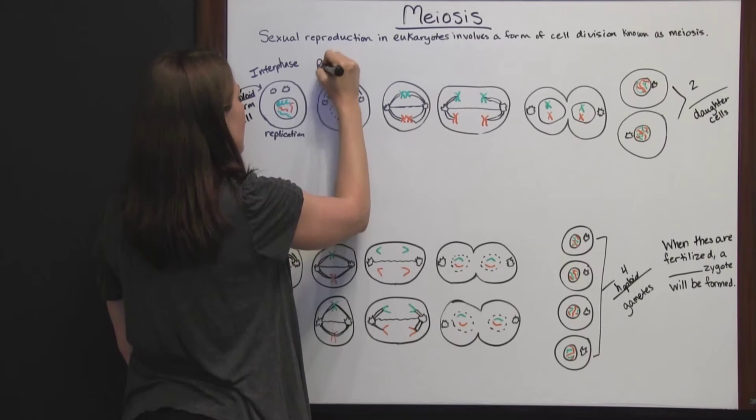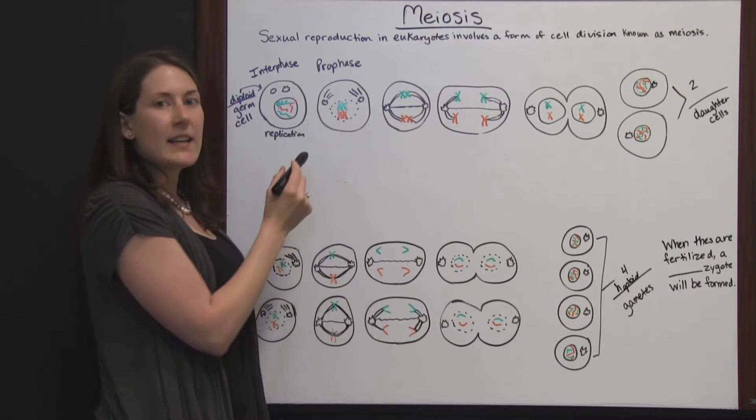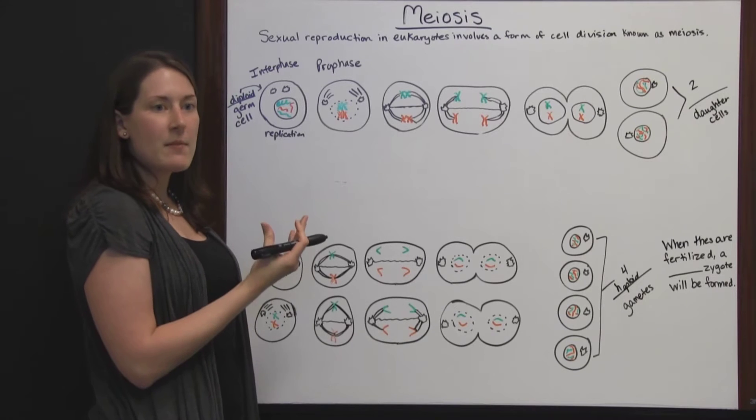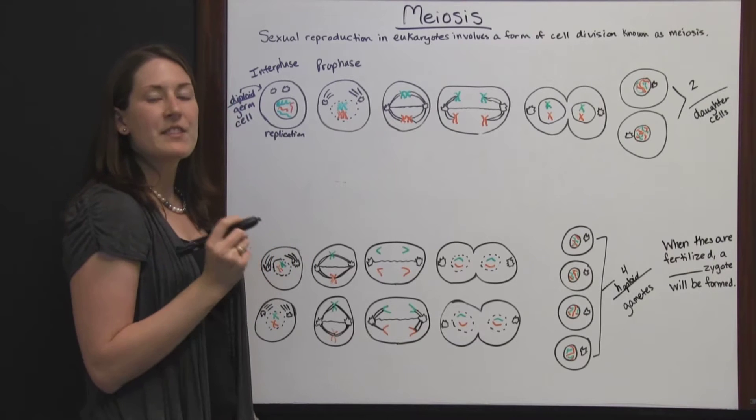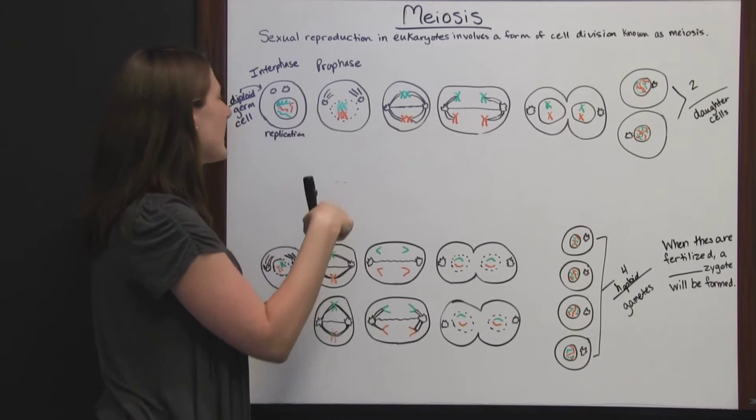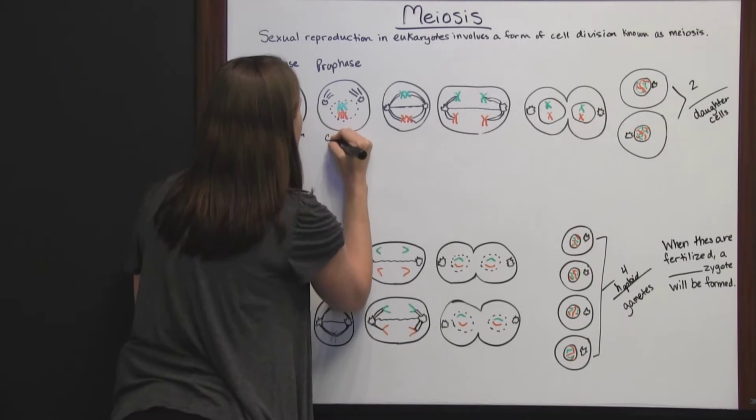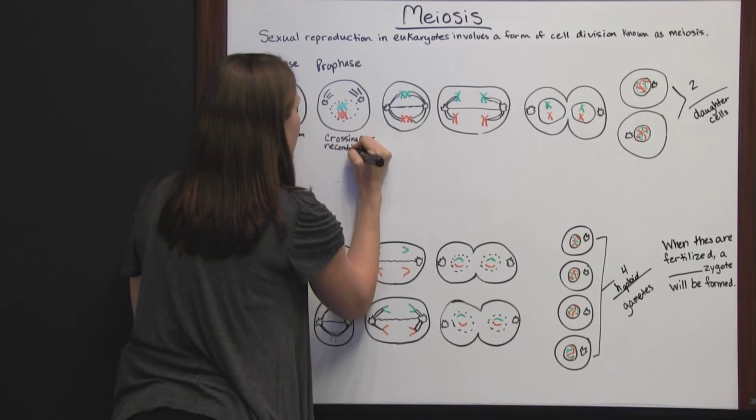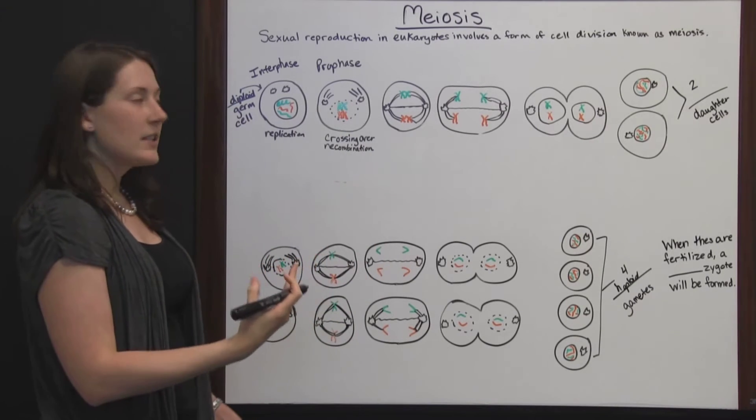In prophase I, the replicated genetic material lines up in homologous pairs, meaning each one is the same genetic material. At these crossover points, they swap a little bit of genetic material. Each pair takes a little from the other pair. This is called crossing over or recombination, which jumbles up the maternal and paternal bits before division starts.